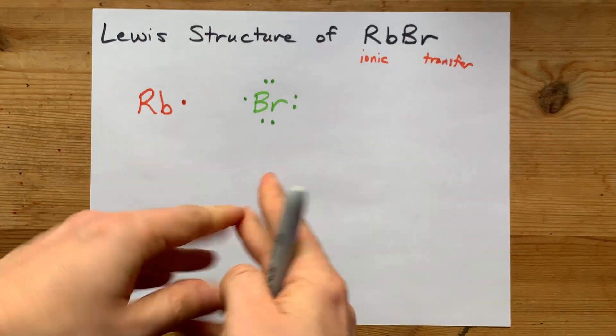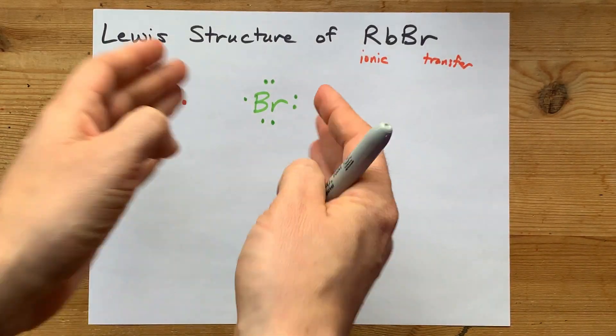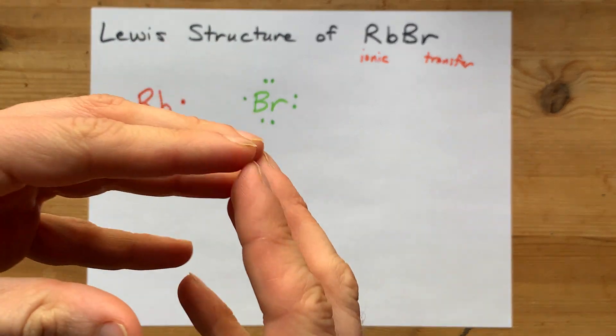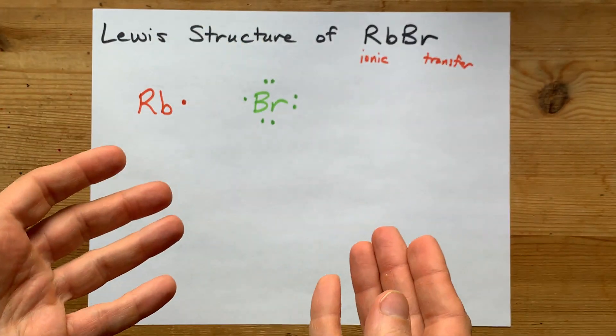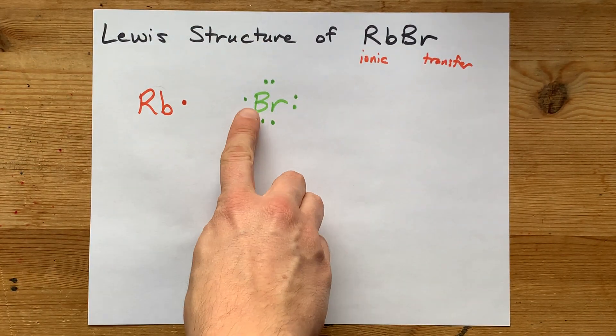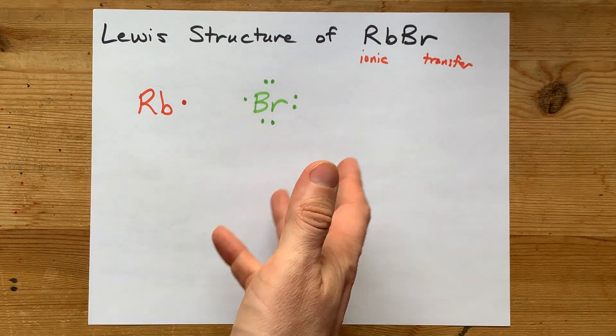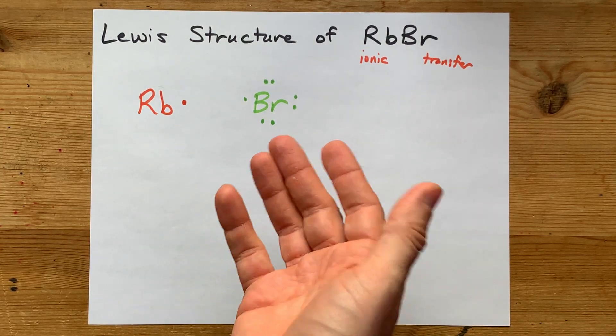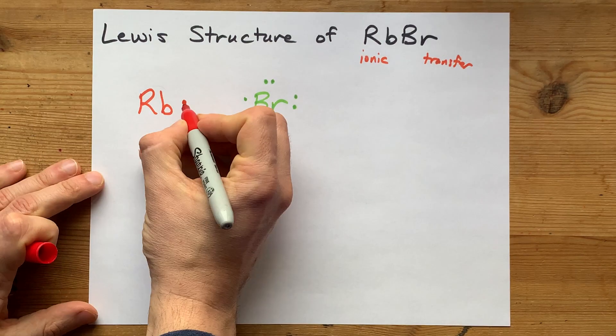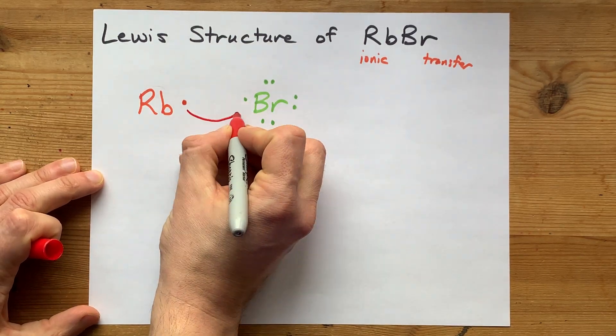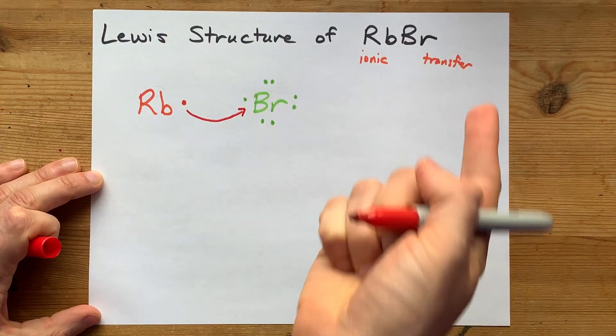Now, the octet rule says that non-metals want to have a full shell of eight electrons. So where is bromine going to get the eighth electron to complete its octet? Well, surprise, surprise, rubidium gives away an electron. There's a transfer.